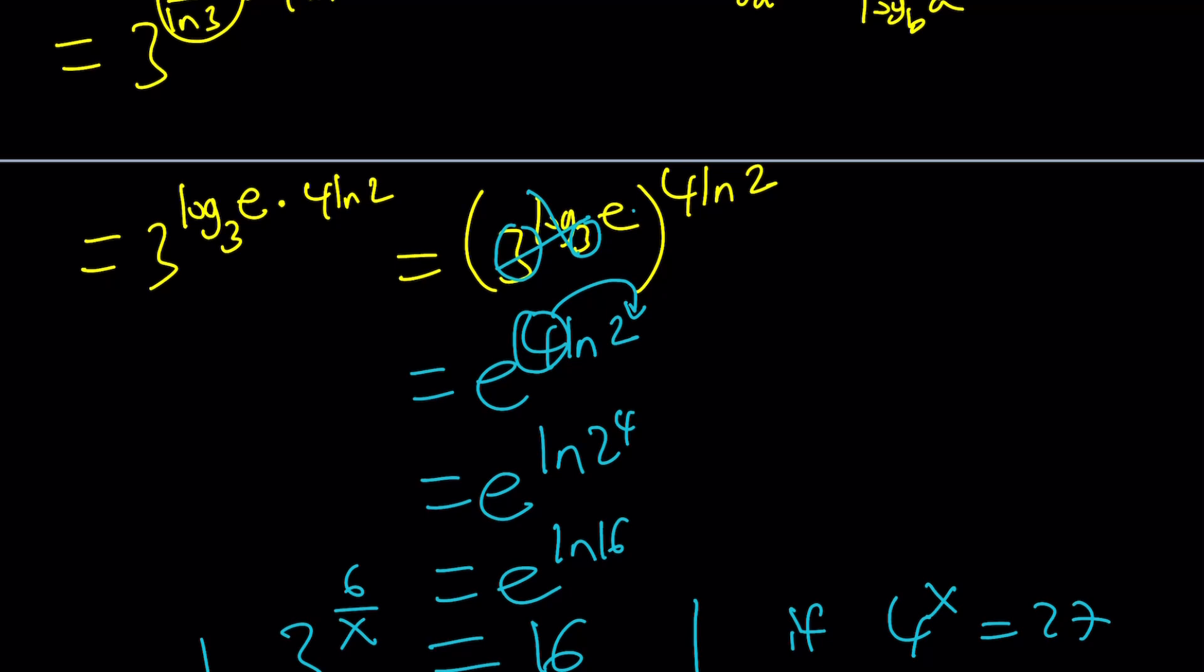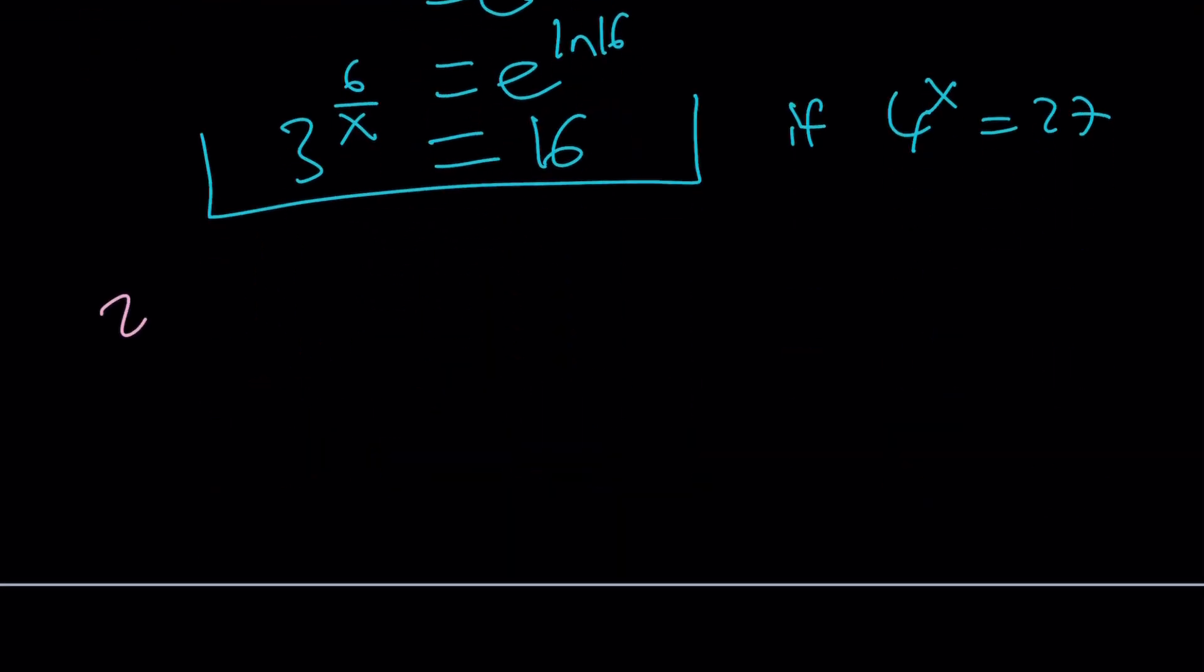Let's take a look at the second method. Again, our problem is 4 to the power of x is 27. We're evaluating 3 to the power of 6 over x. What could be a different way to approach this problem? Here's what I'm thinking. I can write the 27 as 3 cubed.